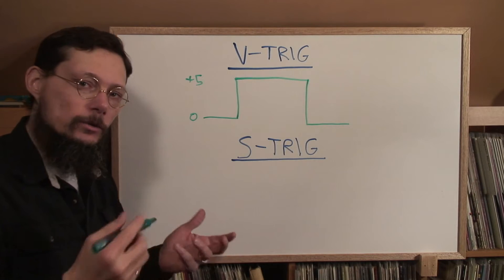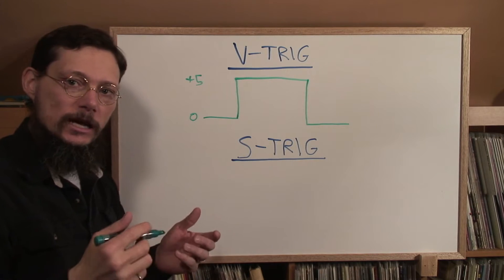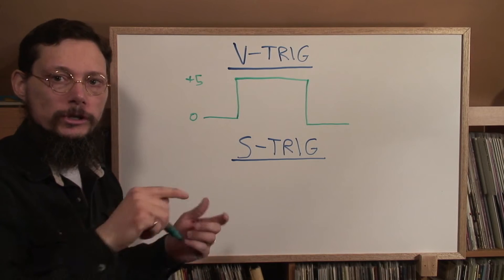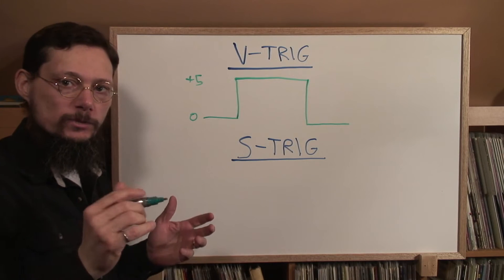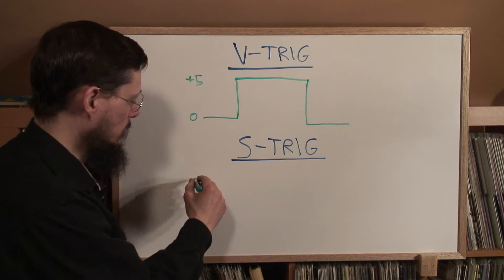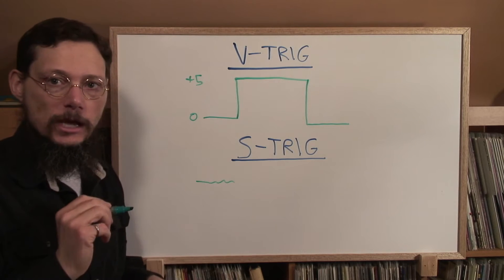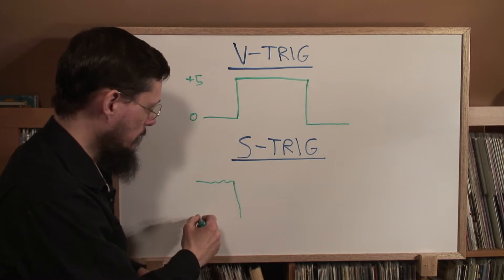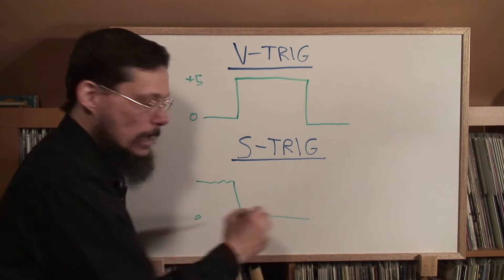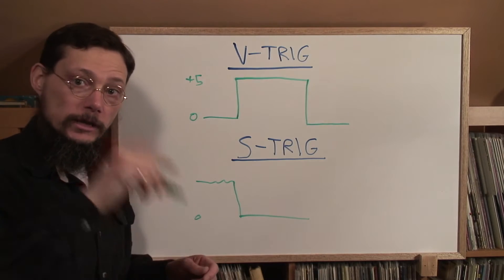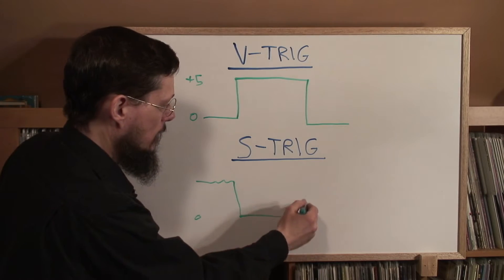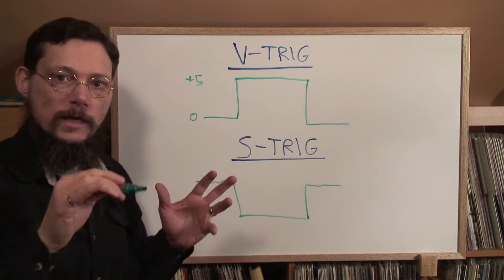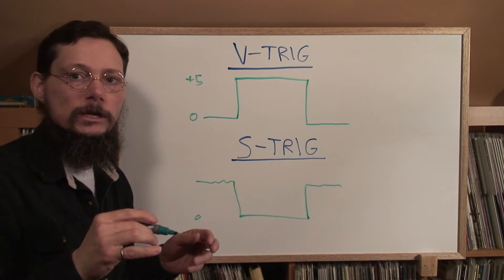Now an S-trig really isn't the voltage. It's actually a switch shorted to ground. So when there are no keys pressed down, it's really not connected to anything, it's kind of at a floating state. But when you push a key down, it shorts to ground or zero volts, and it stays at that level until you release all the keys. And then it goes back up to that floating level, which means it's not really connected to anything.